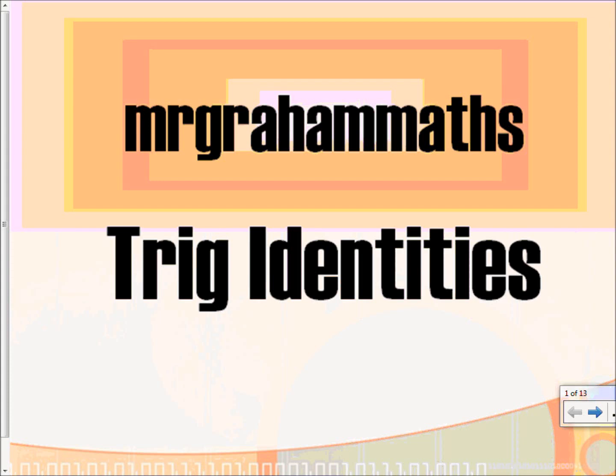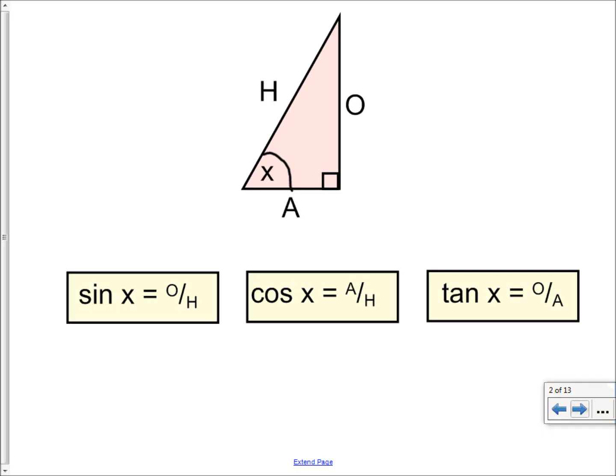In this video, we're going to have a look at trig identities, and how to prove certain things and how to use them. We're going to look at how to actually derive these trig identities first of all. Not that you'd be asked to do that, but it's always good to understand where they come from. All you really need is a basic grasp of right-angle trigonometry and some Pythagoras as well.